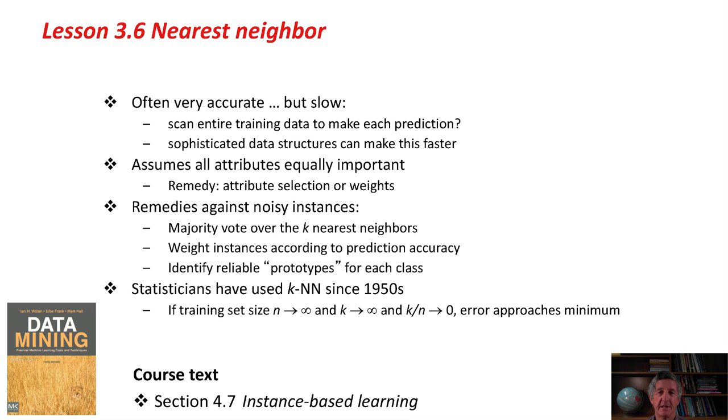If we've got noisy instances, then we can use a majority vote over the k nearest neighbors, or we might weight instances according to their prediction accuracy. We might try and identify reliable prototypes, one for each of the classes.